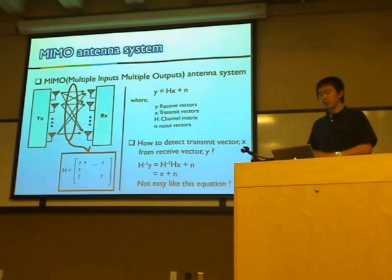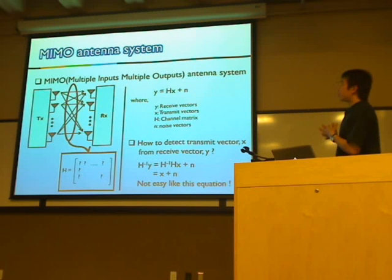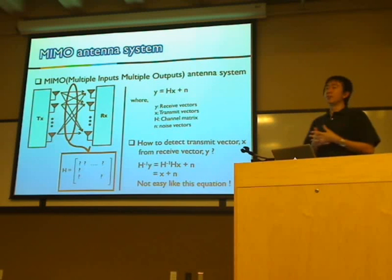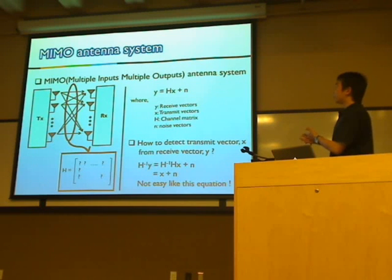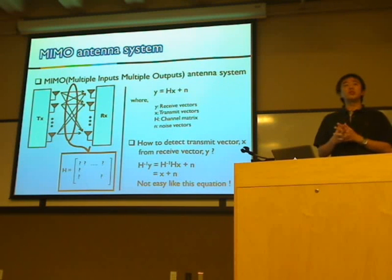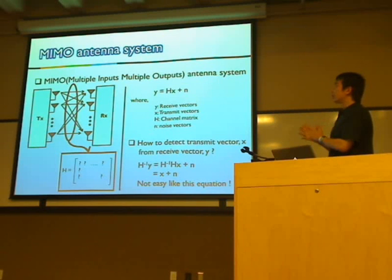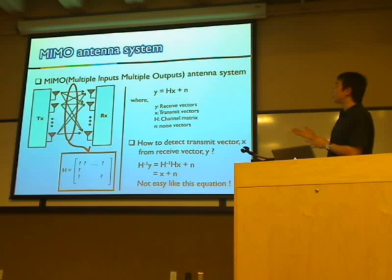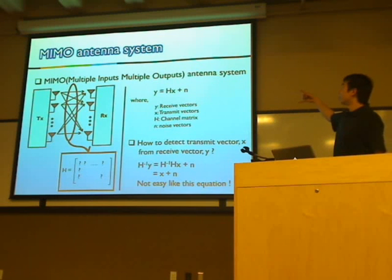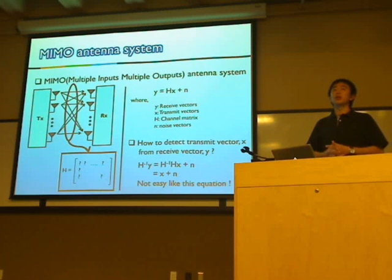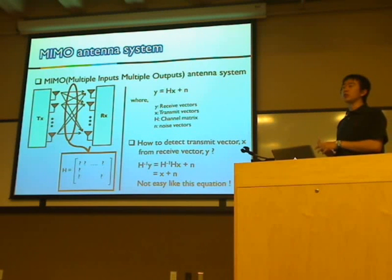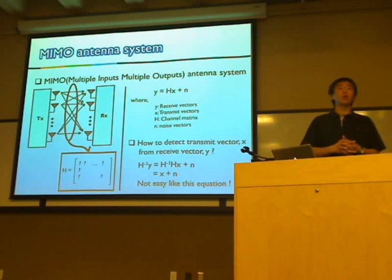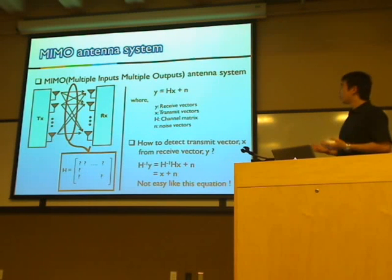I'm going to start with the MIMO antenna system. In a MIMO antenna system, there are multiple antennas in both transceivers and receivers, so its channel characteristic is not simple like a SISO (single input single output) system. This can be represented in matrix form. Y is the received signal, X is the transmitted signal, H is the channel characteristic matrix, and N is a white Gaussian noise vector.